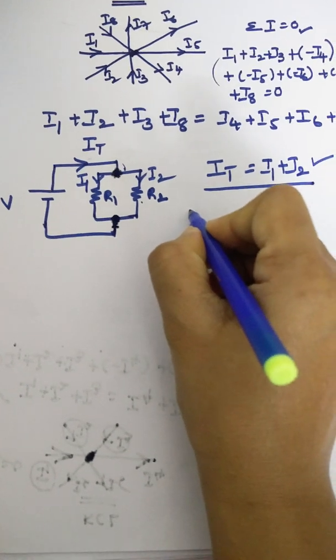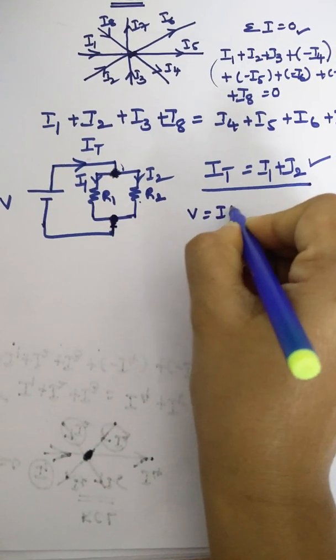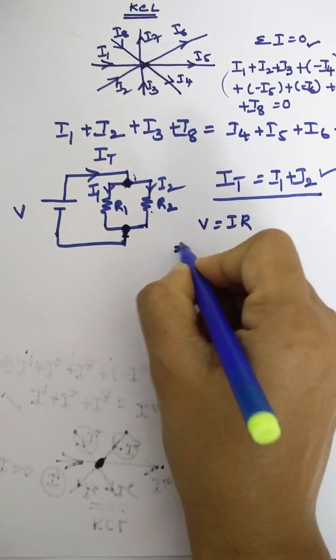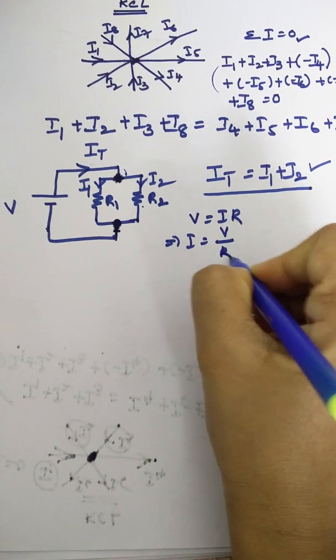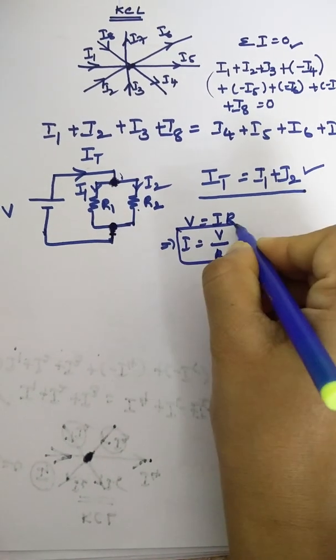And in this concept only, we can write the total resistance. According to Ohm's law, V is equal to IR, so I is equal to V by R. Keep it in your mind.